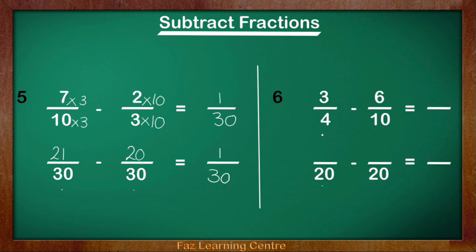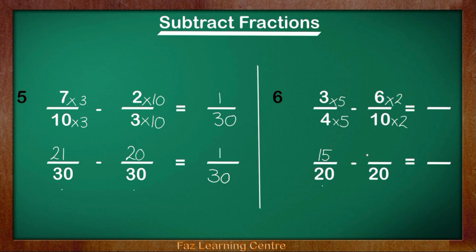Let's look at question 6: 3 over 4 take away 6 over 10. How do we get from 4 to 20? 4 times 5 gives us 20, so we have to do exactly the same to the top: 3 times 5 gives us 15. For 6 over 10: 10 times what equals 20? 10 times 2 equals 20, therefore we do exactly the same to the top: 6 times 2 equals 12, giving us 12 over 20. Now we take away the numerators: 15 take away 12 gives us 3. We drop one of the 20s down, and our answer is 3 over 20.